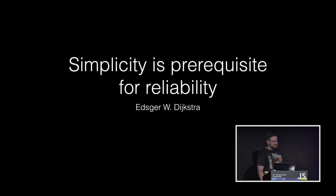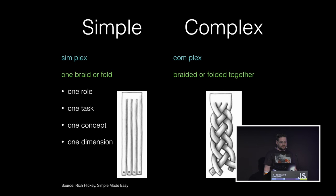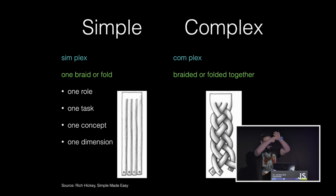We need to build simple systems if we want to build reliable systems. The root of the word 'simple' is 'sim' and 'plex,' meaning one fold or braid — untwisted. The opposite word is 'complex,' meaning braided together or folded, like twisted together. So we need to think about our software in terms of whether it is folded together or not.